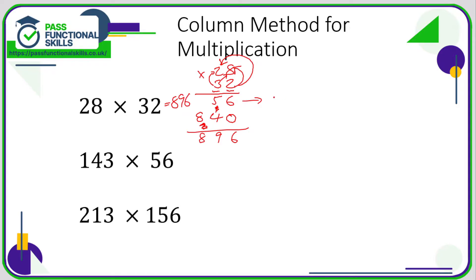What I've done here is the top line represents 2 lots of 28, and the bottom row is 30 lots of 28. 2 plus 30 is 32, so we've broken 32 down into 2 lots of 28 and 30 lots of 28. If I hadn't put that 0 in, I would have the answer 84, which is only 3 lots of 28 — far too low. The reason we put in that 0 is because this is the 3 of 30.